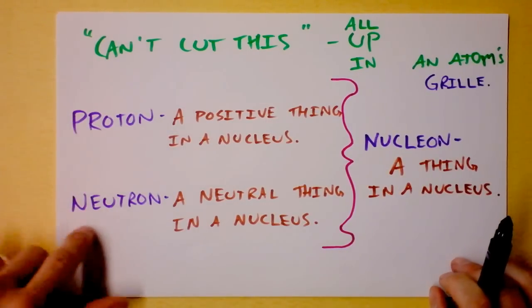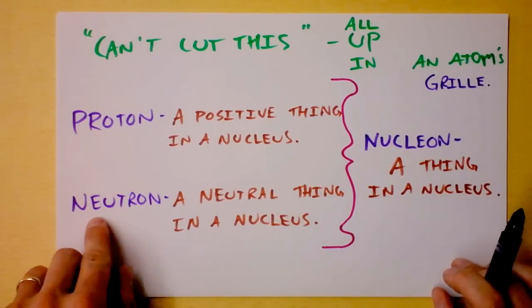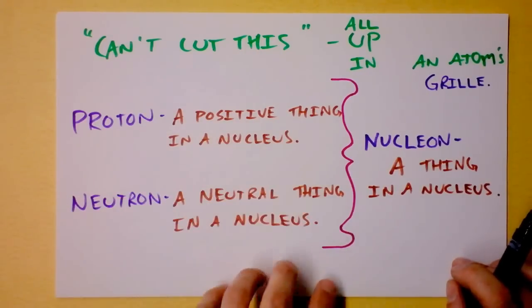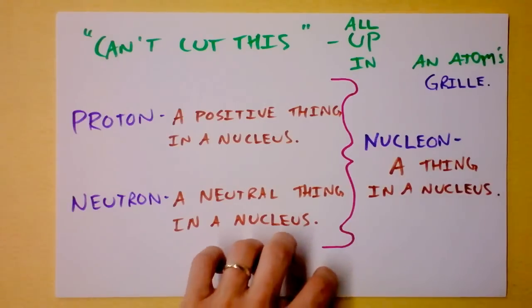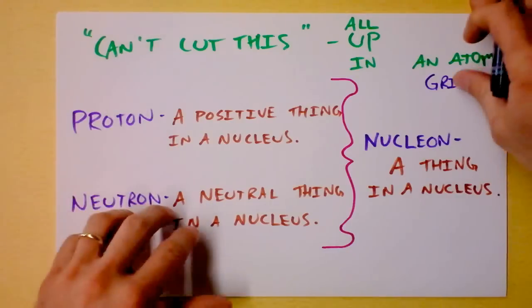Inside of the atom you'll find a nucleus, and inside of that you'll find a proton, which is a positive thing that hangs out in the nucleus. A neutron, which is a neutral thing that hangs out in the nucleus. And these two together make up a class of particles called nucleons, which are things that are in the nucleus. Outside of the nucleus there's an electron, and you don't know where it is.